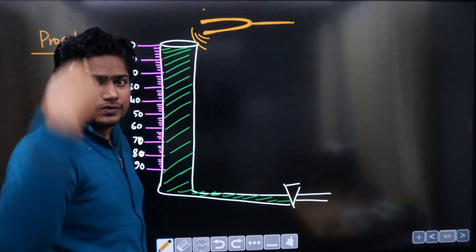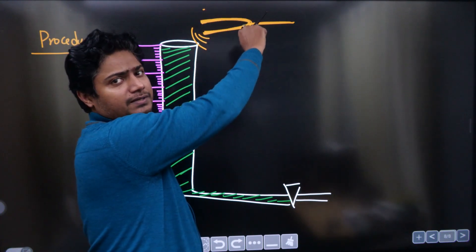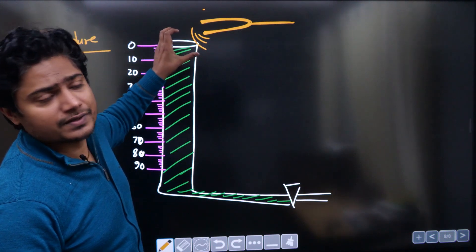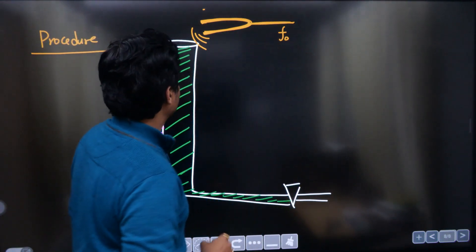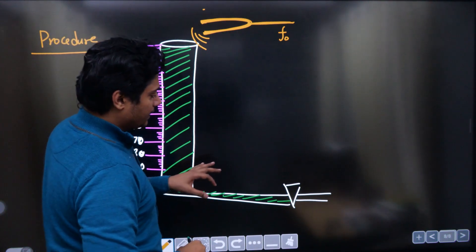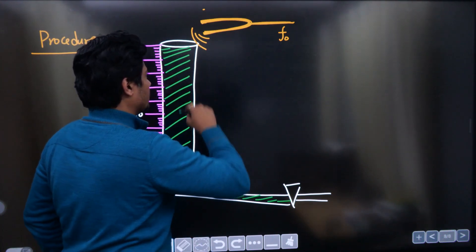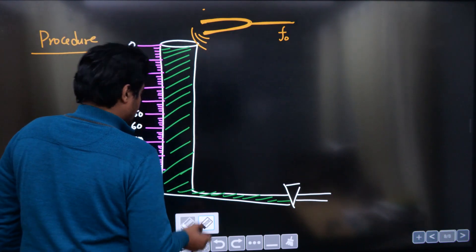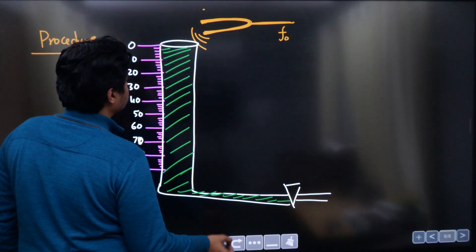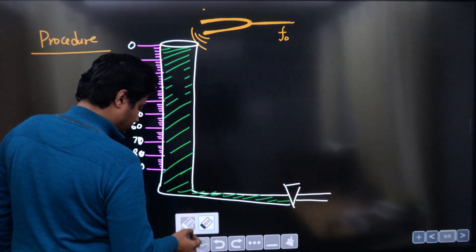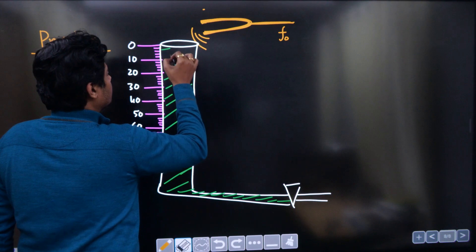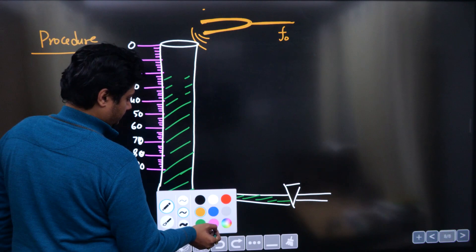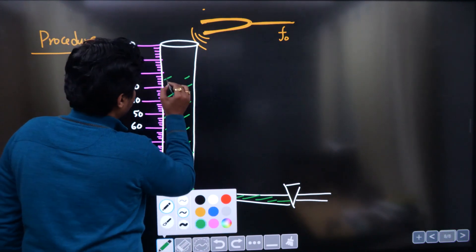Now you bring a tuning fork — it looks like a fork — and you vibrate it by hitting it against some solid surface. When the tuning fork starts vibrating, it emits sound in the air. When you place it over the mouth of the resonance tube, it emits a sound of single frequency, let's call it f₀. The second step is you slightly decrease the water level and observe, trying to listen carefully.